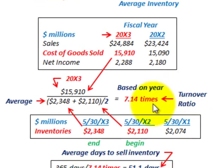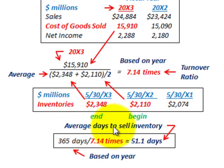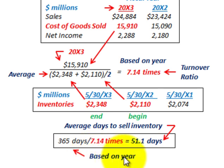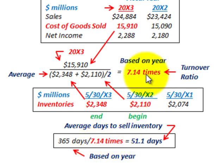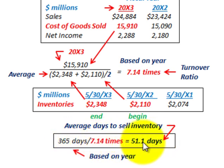Next, we determine the average days to sell inventory. Since this is based on a year, we have 365 days. Dividing 365 by the turnover ratio of 7.14 gives us 51.1 days — that's the average days to sell inventory for 20x3.